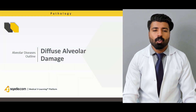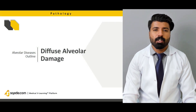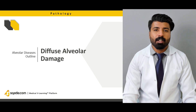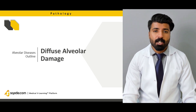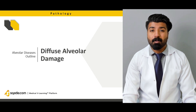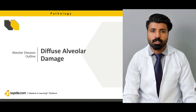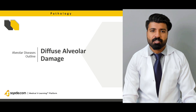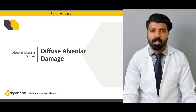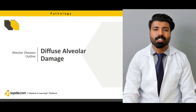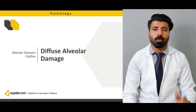First of all, we're going to talk about diffuse alveolar damage. In diffuse alveolar damage we're going to talk about how it's affected, why the hyaline membrane is formed inside of it, why pulmonary edema occurs inside of it, what's the pathogenesis of it, which structures are affected, and how do we tackle it and how the patient is going to present to us.